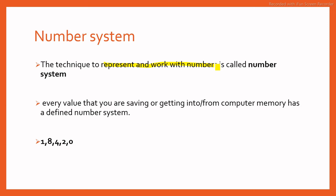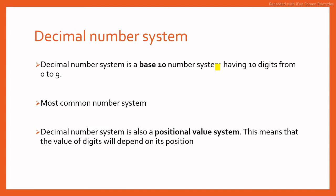First we will see decimal number system. Decimal number system is a base 10 number system having 10 digits from 0 to 9. The most common number system in our daily life, the number system or counting we use is the decimal number system. Decimal number system is a positional value system.